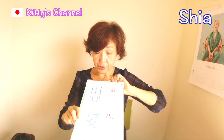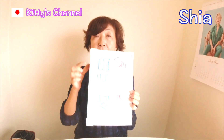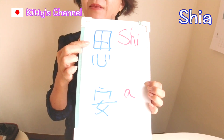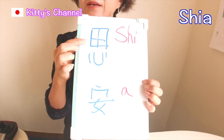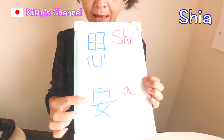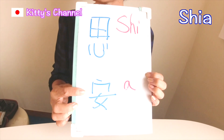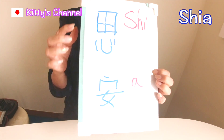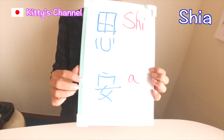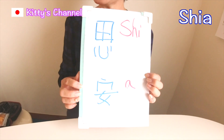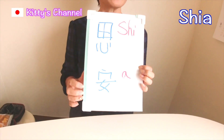Sia, are you listening? The first character, 思, means thinking. The second character, 安, means safe. Thinking safe — wow, your name is so nice and proper!